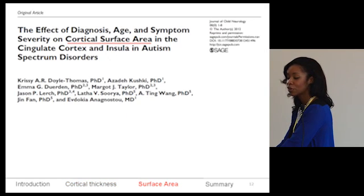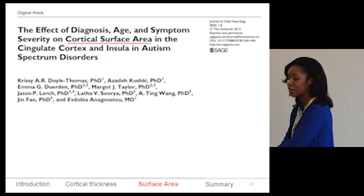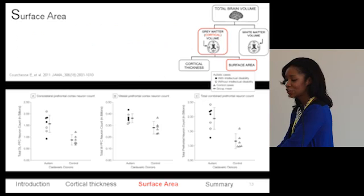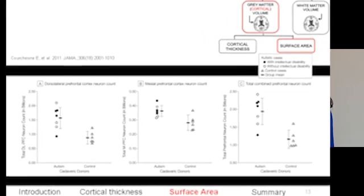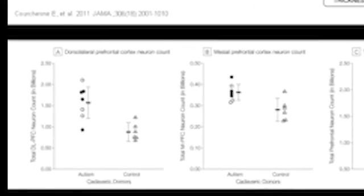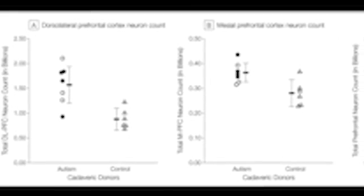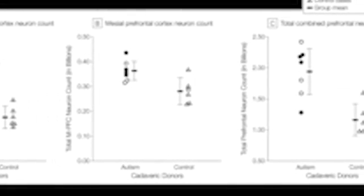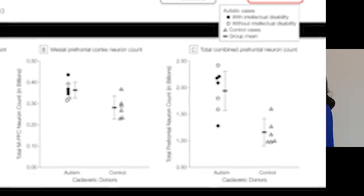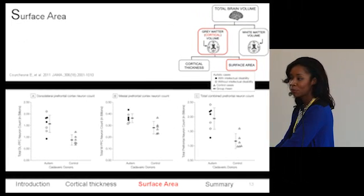We then looked at cortical surface area, another component of gray matter volume. This measure tells us about neuron count as well as neuron size. From post-mortem tissue analysis, we see that individuals with autism have a greater number of neurons, particularly in frontal brain regions. Surface area is a measure we can do in vivo that can point to these atypicalities at the cellular level.